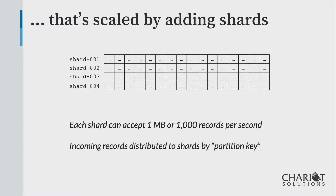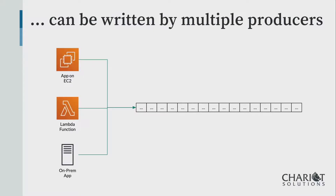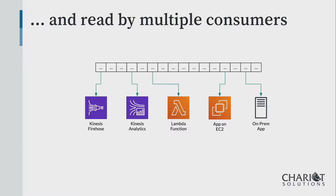Since Kinesis is a distributed system, never rely on ordering — messages are in the order that Kinesis receives them, but you have multiple writers. This slide shows a typical example of using Kinesis as the center of a logging pipeline, where applications write log messages. In the case of IoT, you'd only have IoT Core on the producer end. You can also have multiple consumers — an on-premises app, applications on EC2 or Lambda. Kinesis will invoke your Lambda functions without you having to explicitly read the stream.